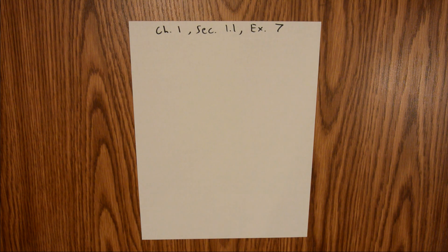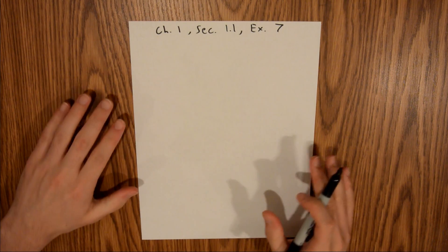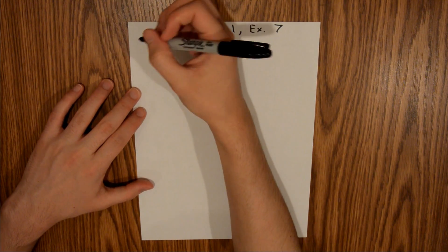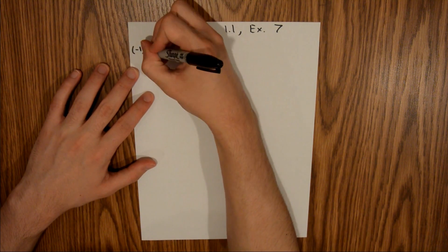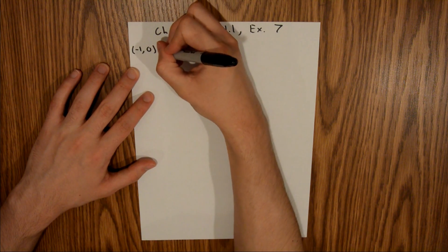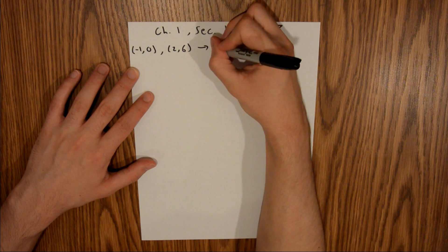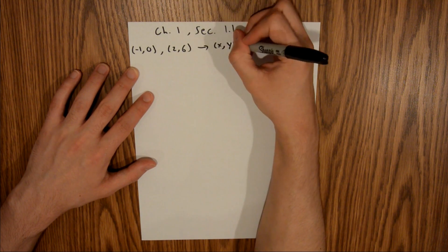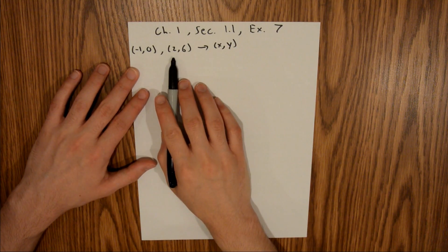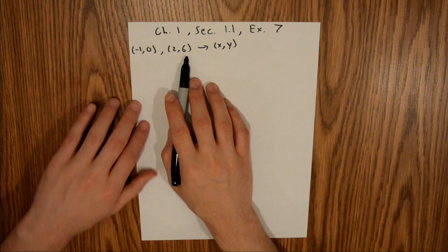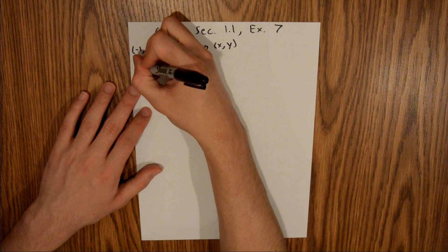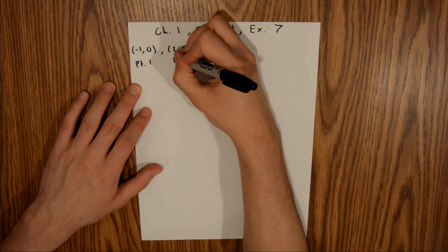In exercise 7, we are given two points and asked to find the equation for the line that passes through those two points. In this problem, the two points are (-1, 0) and (2, 6). These are in the notation (x, y). Your first indices are x-coordinate and your second indices are y-coordinate for both points. I'm going to label these as point 1 and point 2.